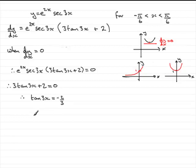Now, all you've got to do is inverse tan both sides and you get 3x equals the inverse tan of minus 2/3.